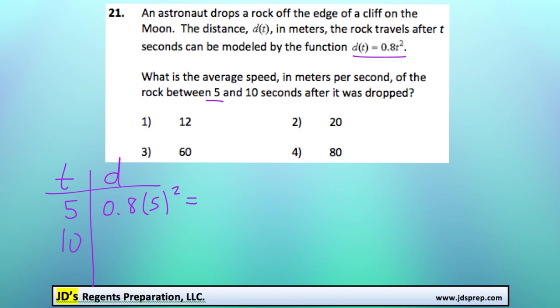And then we're also going to look at when time is 10 seconds. That would be 0.8 times 10 squared. So 0.8 times 25 should get you 20, and then 0.8 times 100 is 80.